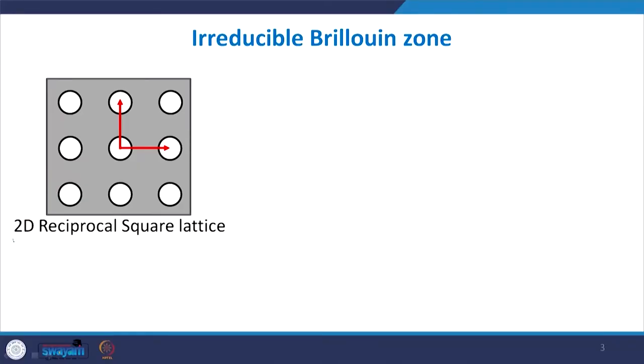When all the symmetry is removed, the non-symmetrical basic unit left is called the irreducible Brillouin zone. Let us discuss some examples. A 2D reciprocal square lattice is given. We know that for a square lattice the reciprocal itself will also be a square lattice. This is the reciprocal lattice, this is the lattice point about which we have to define a Brillouin zone, and these are the various lattice vectors.